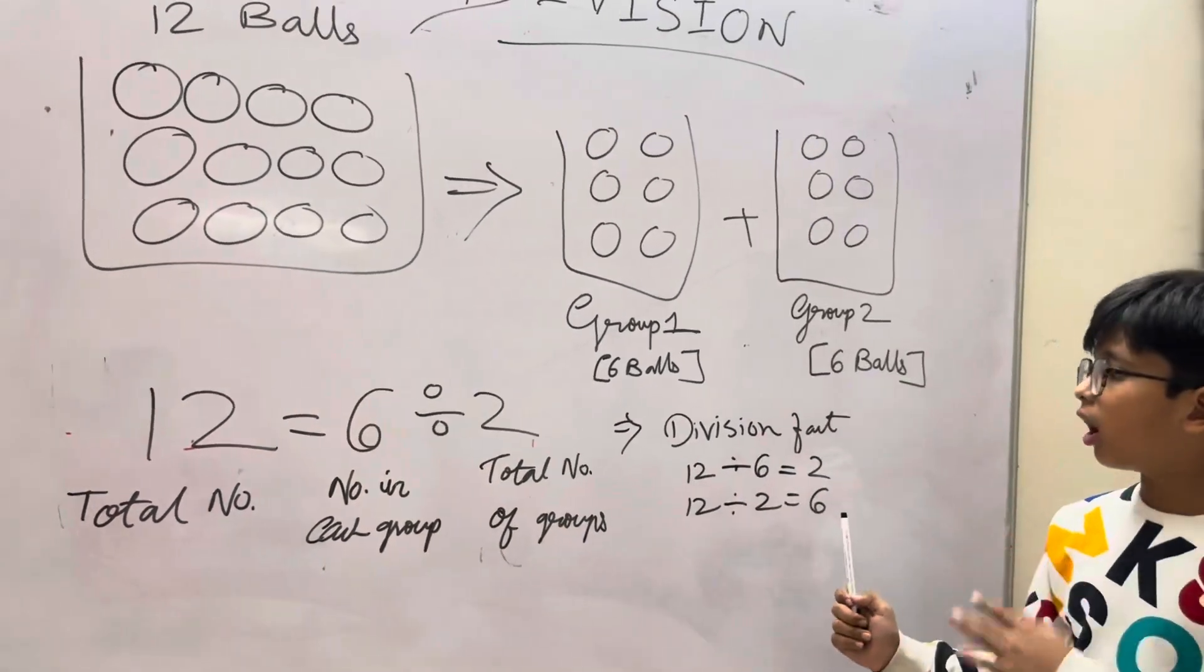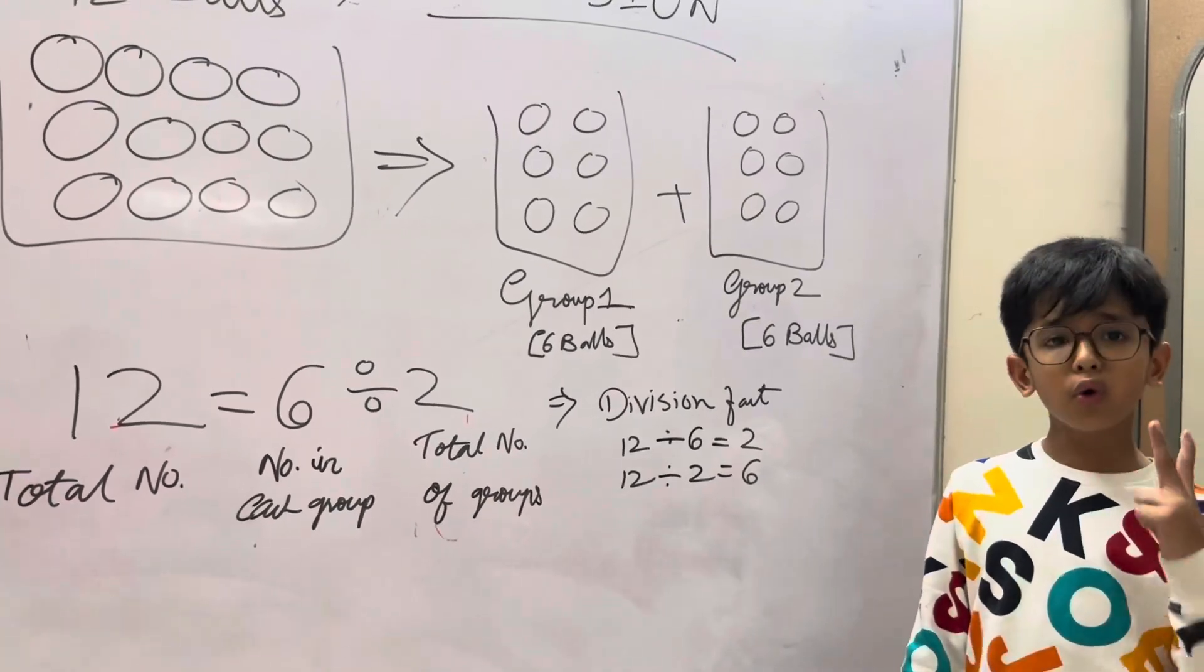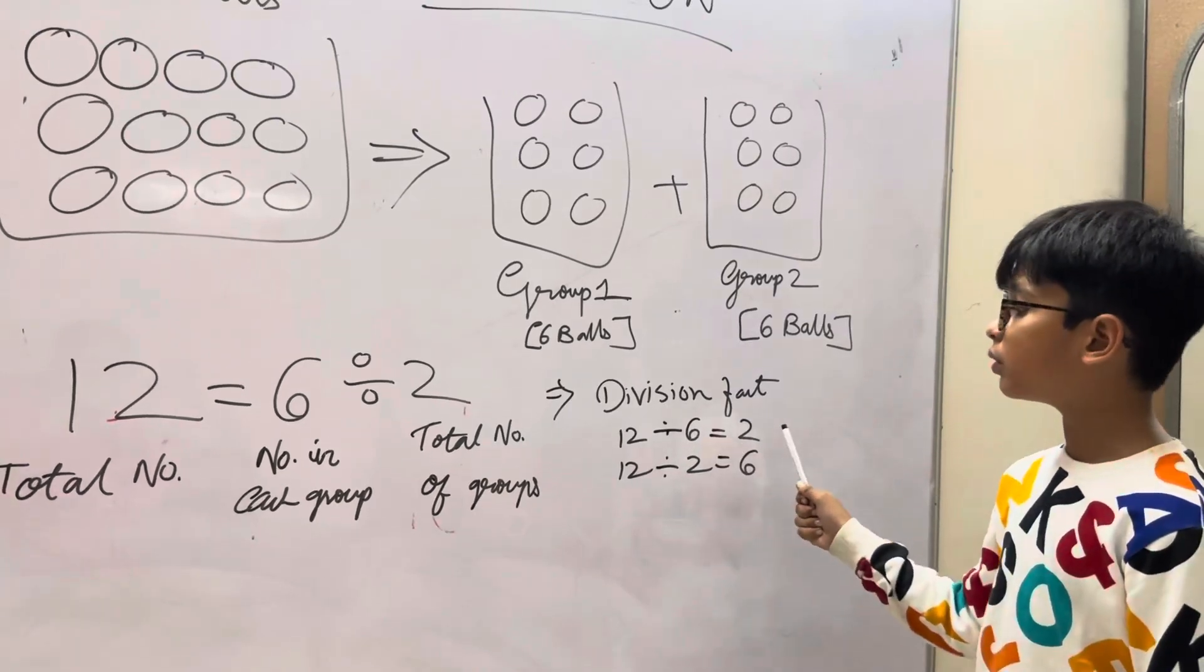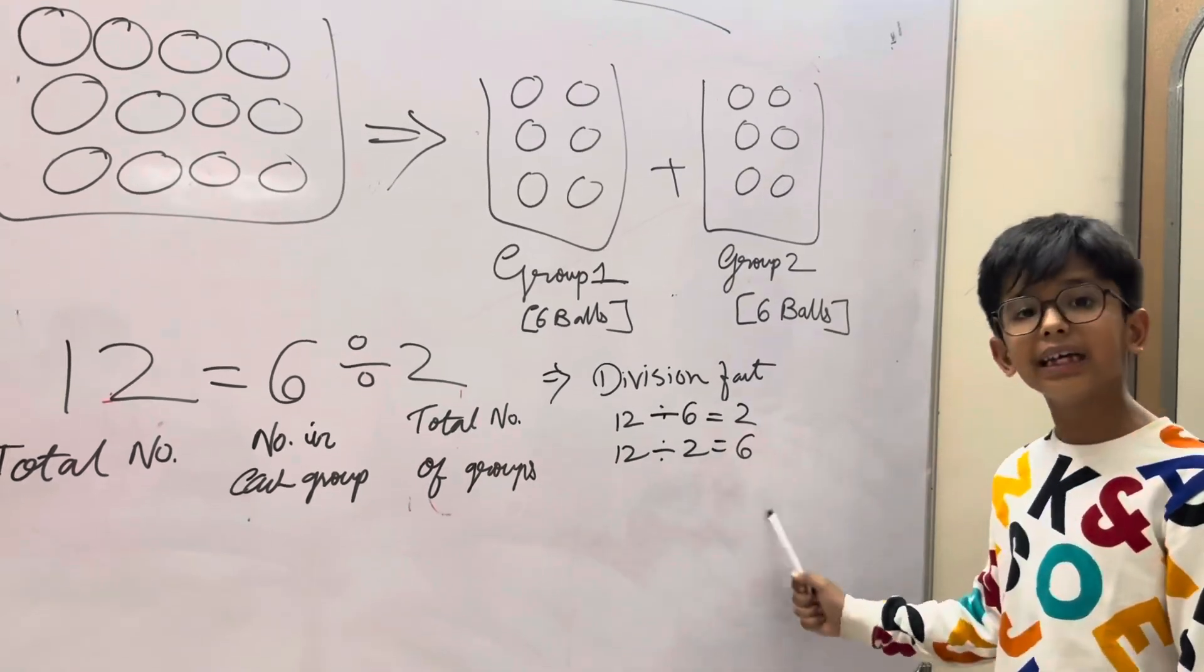Now write the division fact. The division fact can be written by 2 methods. So first method is 12 divided by 6 is equal to 2. Now second method is 12 divided by 2 is equal to 6.